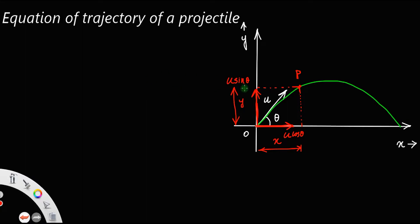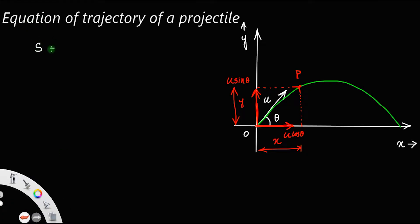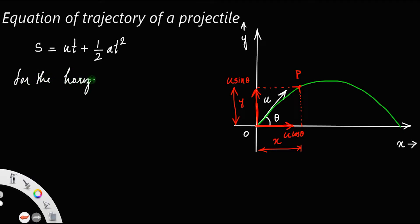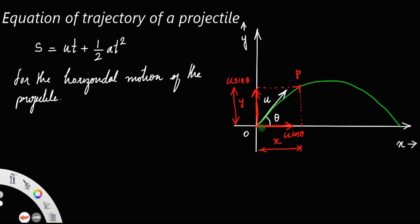You have to use the second kinematic equation, that is s = ut + ½at². You should take the horizontal and vertical components separately and apply this second kinematic equation for both directions separately.